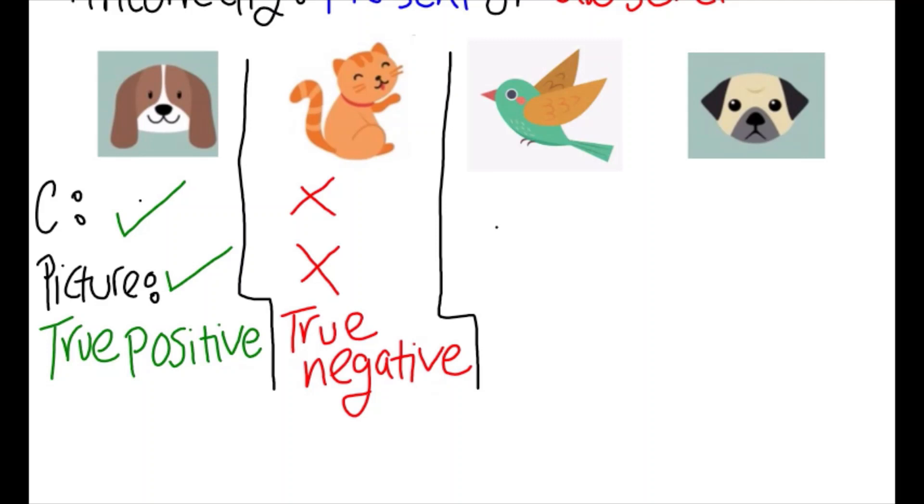In our third picture, we have a bird, but the child states that this is a dog. This is a false positive, positive because the child had stated there was a dog, but false because there wasn't.